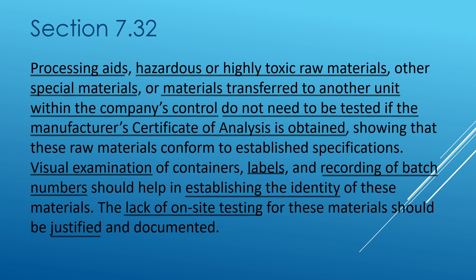If materials are transferred from one unit to another unit of the same company, you can establish identity by confirming your own transport was used, that materials were loaded and sealed at the original manufacturer's site, and that the same sealed container arrived while maintaining all required storage and transport conditions. When received at the other unit and taken into stock, if everything is intact, then you do not have to perform any testing.